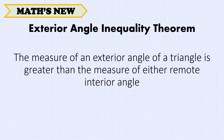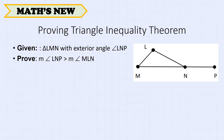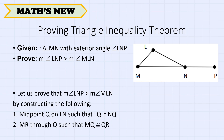The Exterior Angle Inequality Theorem states that the measure of an exterior angle of a triangle is greater than the measure of either remote interior angle. Given triangle LNM with exterior angle LNP, we will prove that the measure of angle LNP is greater than the measure of angle MLN. We construct midpoint Q on LN such that LQ is congruent to NQ, and draw MR through Q on LNP such that MQ is congruent to QR.